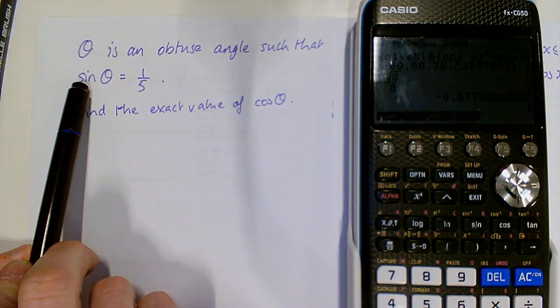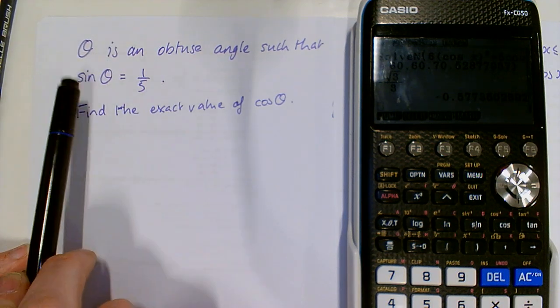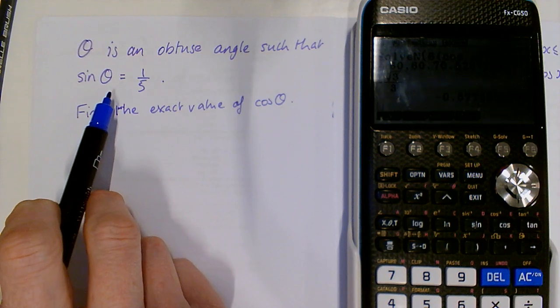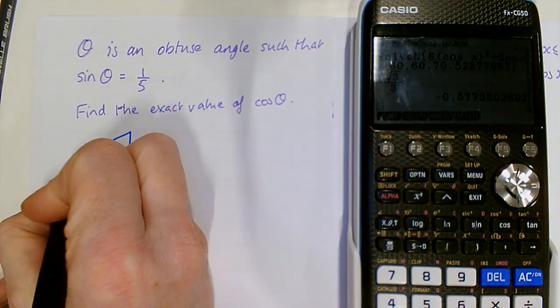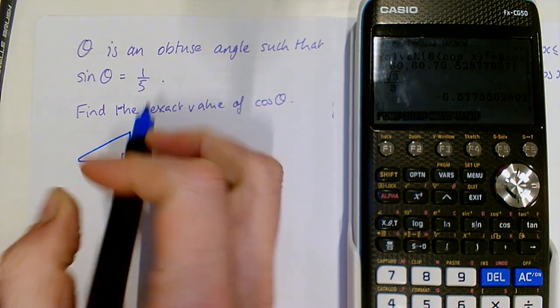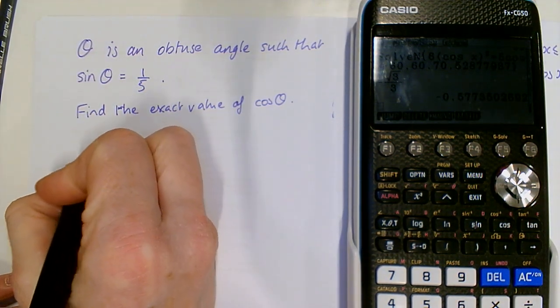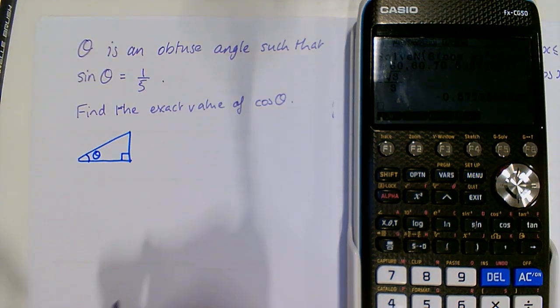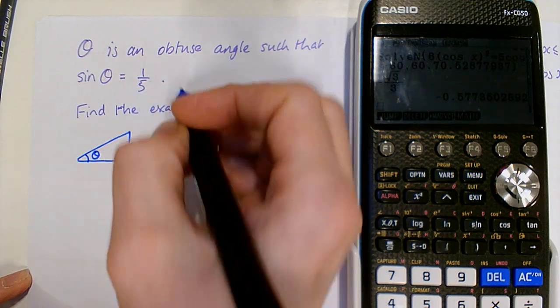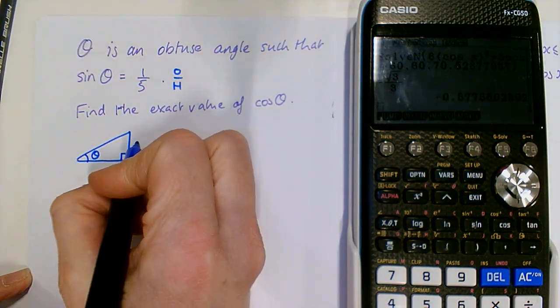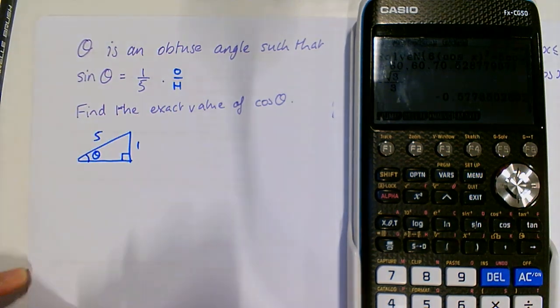So we are given that theta is an obtuse angle and sine theta is one-fifth. So we're going to start by focusing on sine theta equals one-fifth and draw ourselves a right angle triangle and completely ignore the fact that theta is obtuse. It won't matter. So we're going to put in theta in any corner that you like.